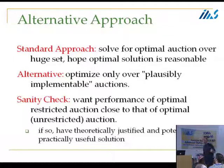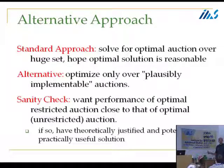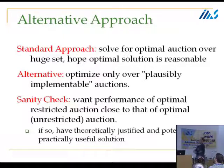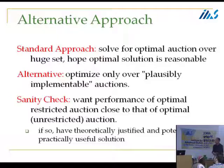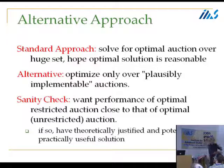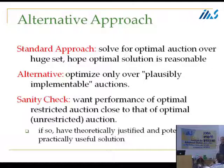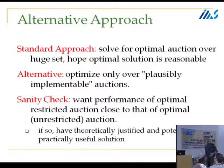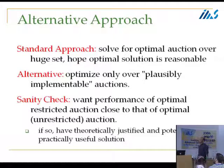You identify a set of simple, plausible, implementable auctions — I want to warn you we need formal definitions of these fuzzy English words, but the research agenda is not there yet. You might want to optimize over a restricted subset of auctions and find the best one. As a sanity check, to make sure you haven't thrown out the baby with the bathwater, it better be the case that when you optimize over this restricted set, you haven't thrown out all the good auctions — the optimal over this restricted set should be provably close to the unconstrained optimum.